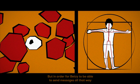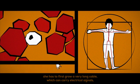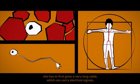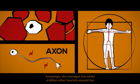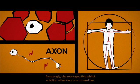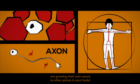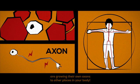But in order for Betsy to be able to send messages all that way, she has to first grow a very long cable which can carry electrical signals. And this cable is called an axon. Amazingly, she manages this while a billion other neurons around her are growing their own axons to other places in your body.